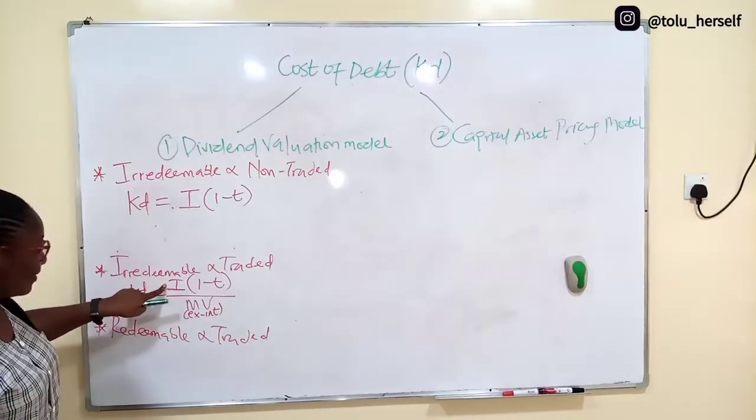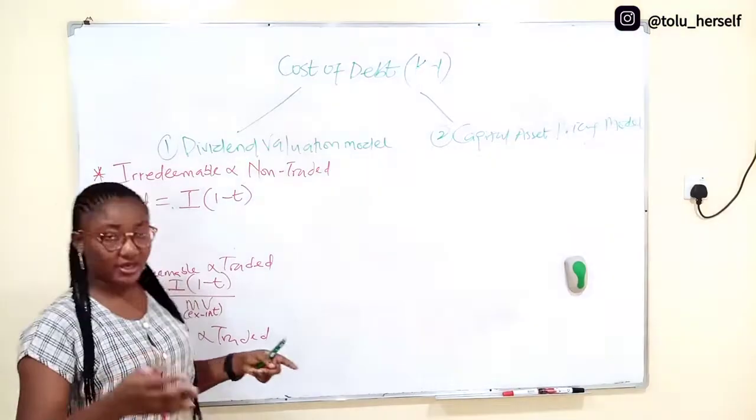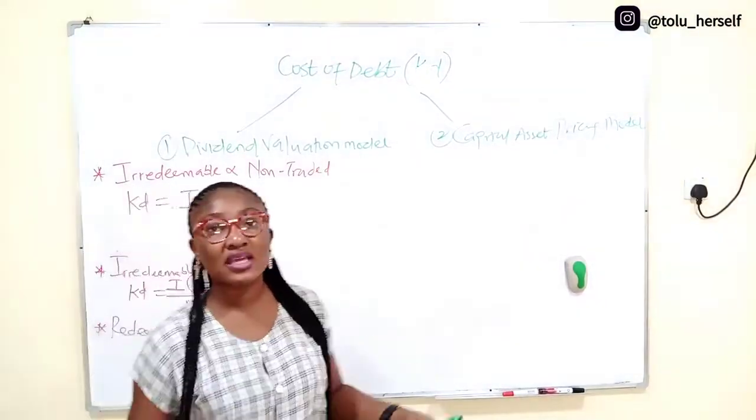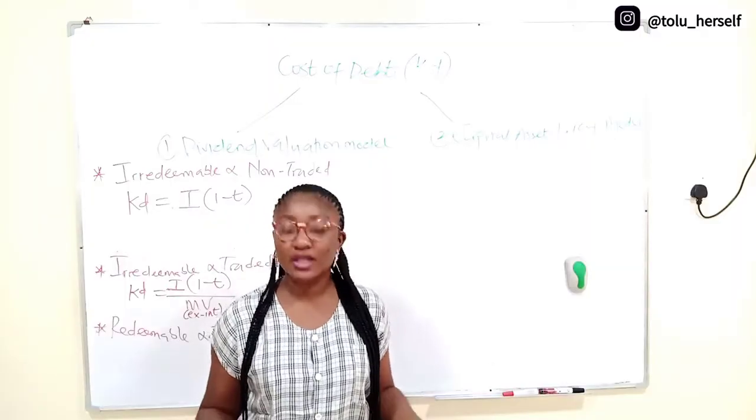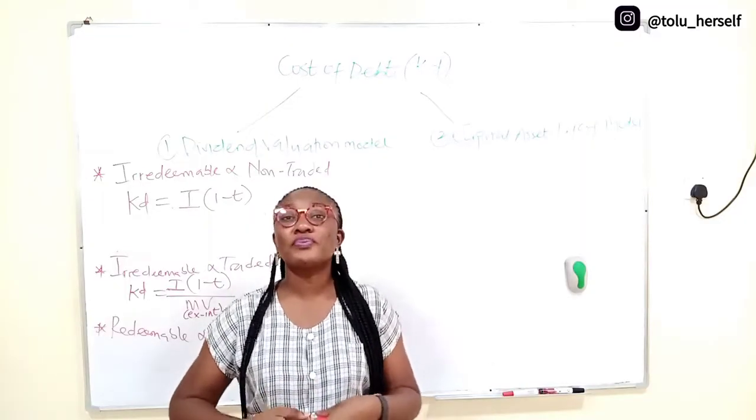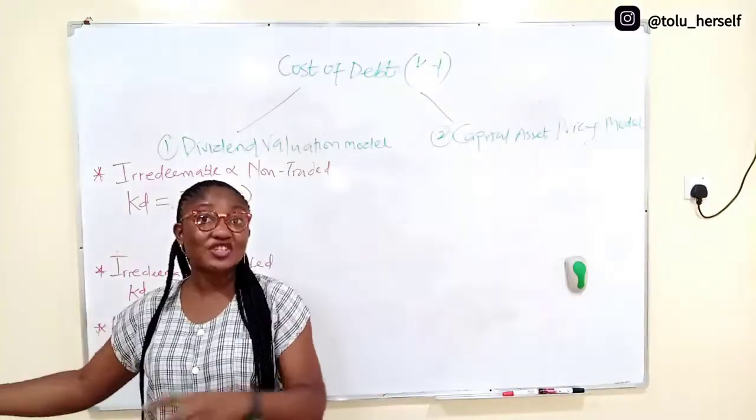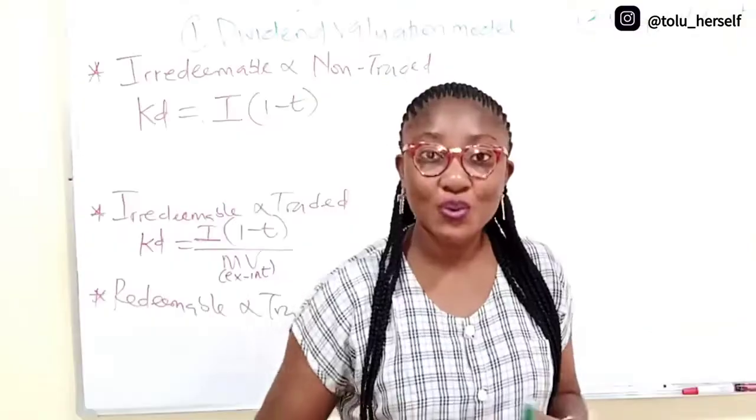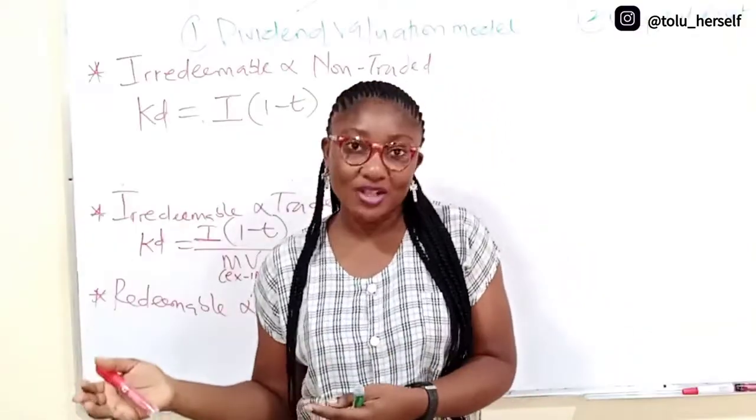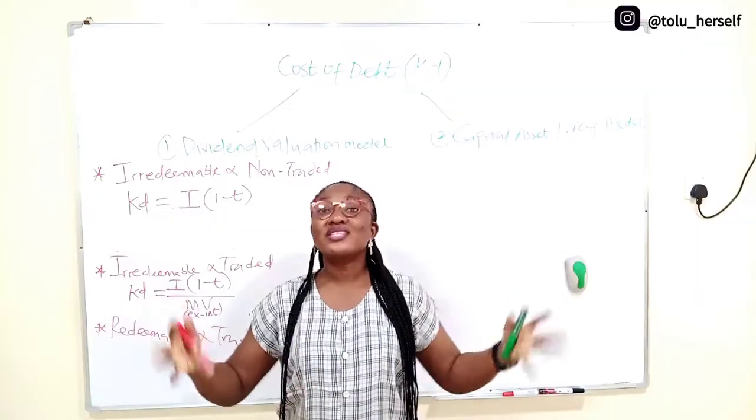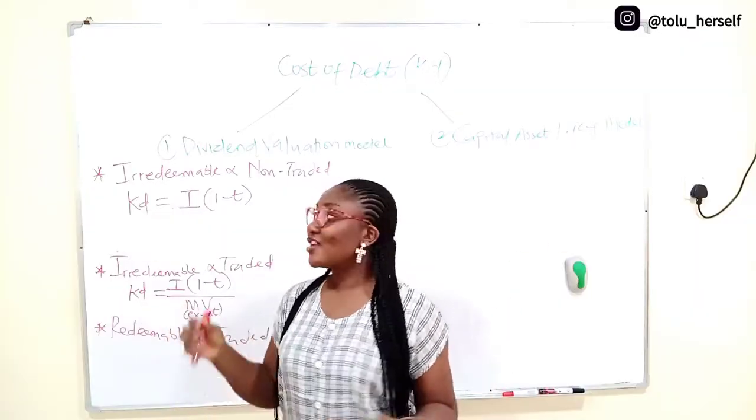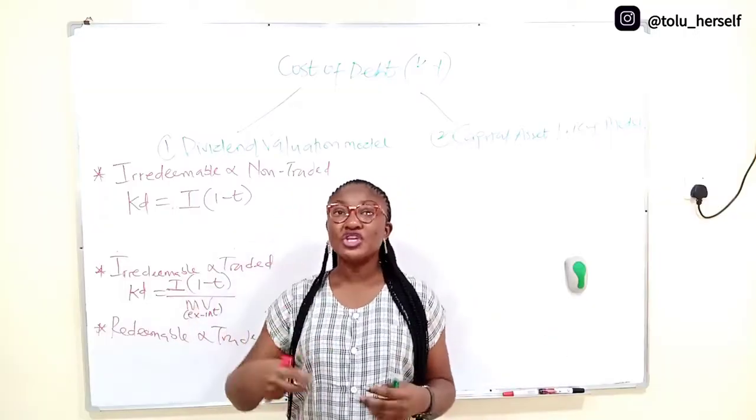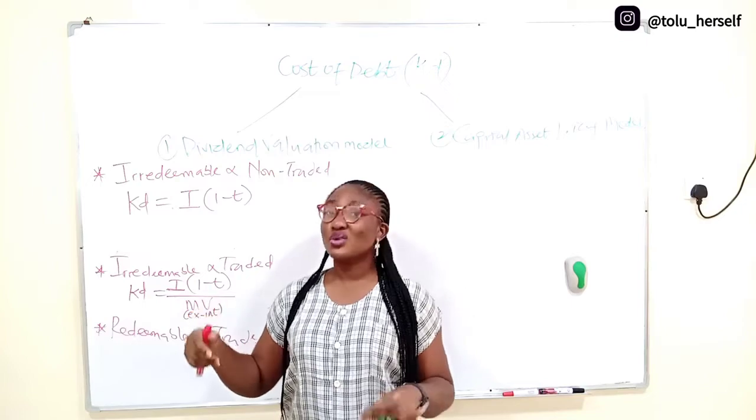This interest, I meaning interest, is like coupon. It's called coupon, the coupon that is paid to the debt holder. If a company ABC collected loan or debt of say 10 million and it is called a 7% 10 million debt, that 7% is the coupon rate. So 7% of 10 million, that 10 million is called the face value of the debt. And they are usually giving $100 in most questions, except if stated otherwise.